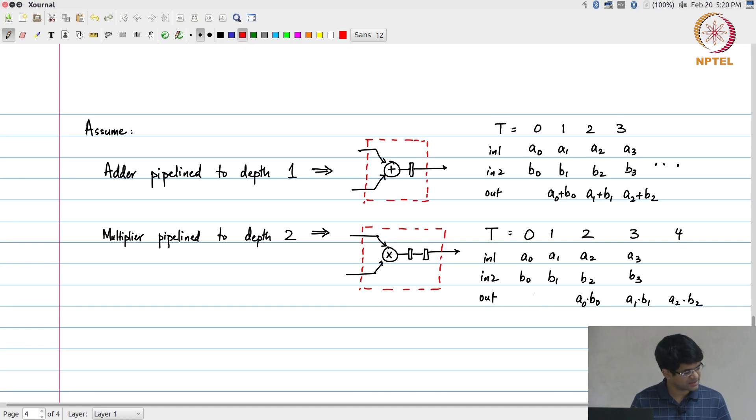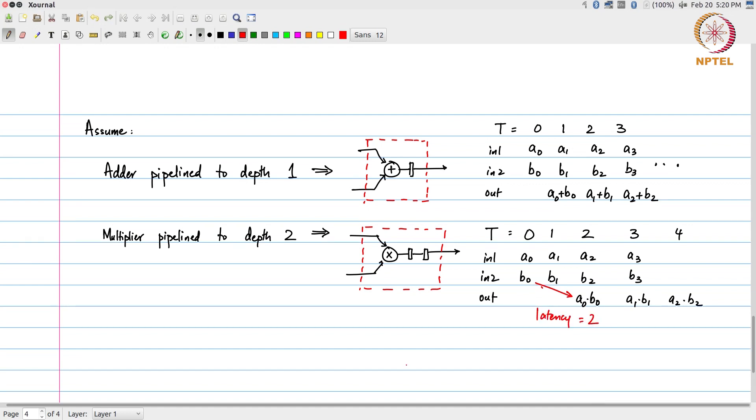In other words, there is a latency equal to 2, initiation interval is equal to 1. That is essentially the meaning of these statements - pipelined to depth 1 and pipelined to depth 2. Obviously, the fact that the adder is pipelined to depth 1 and multiplier to depth 2 are incidental. They help to illustrate a point, that is all.